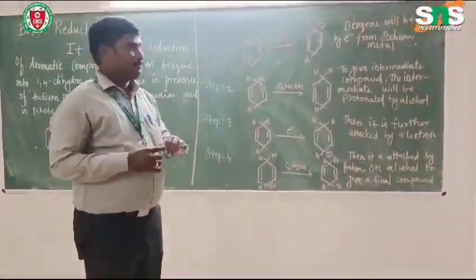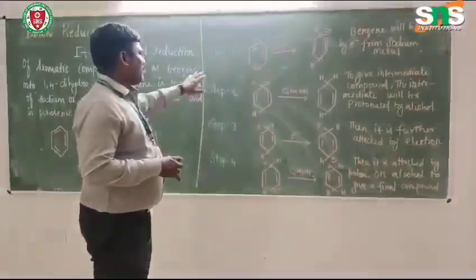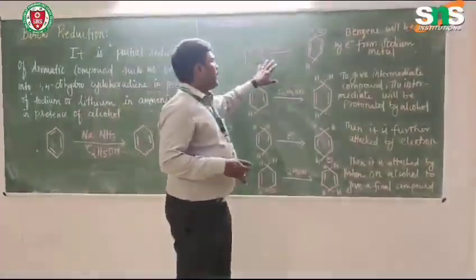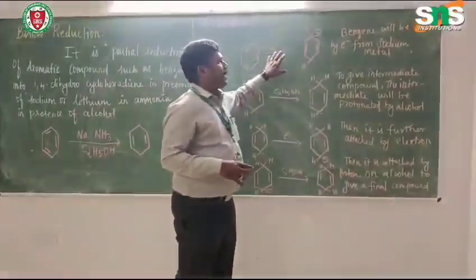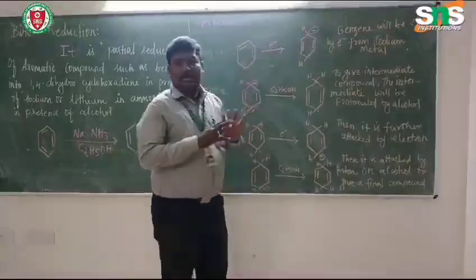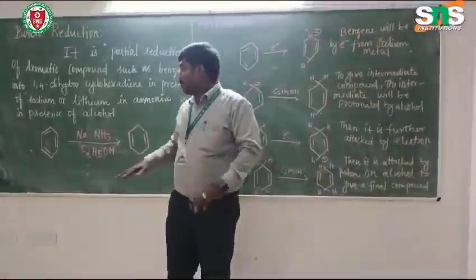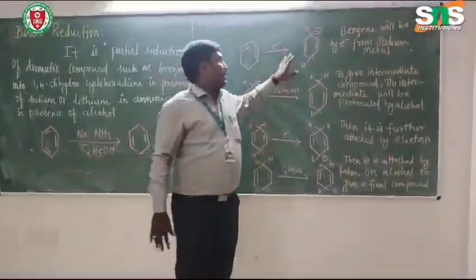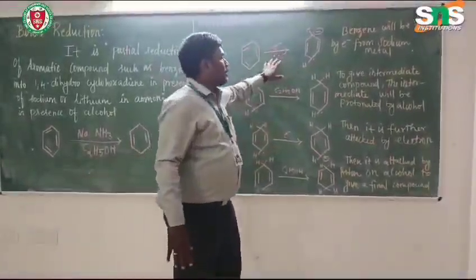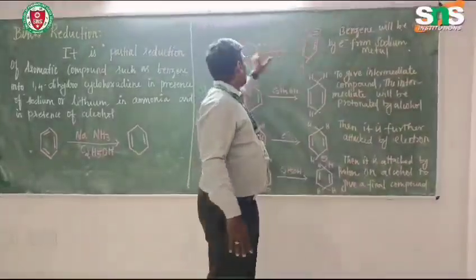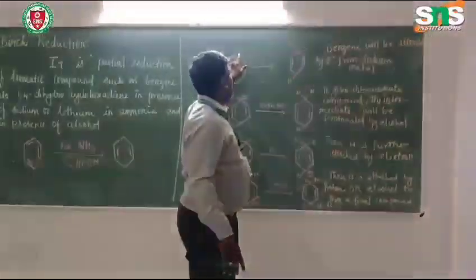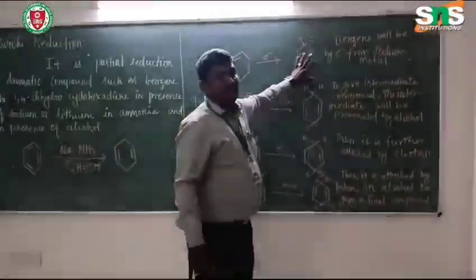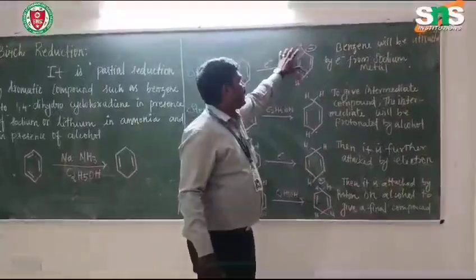What is the mechanism behind this reaction? It involves four steps. The first step is the addition of an electron. This electron is provided by the sodium or lithium metal, giving a radical anion intermediate.